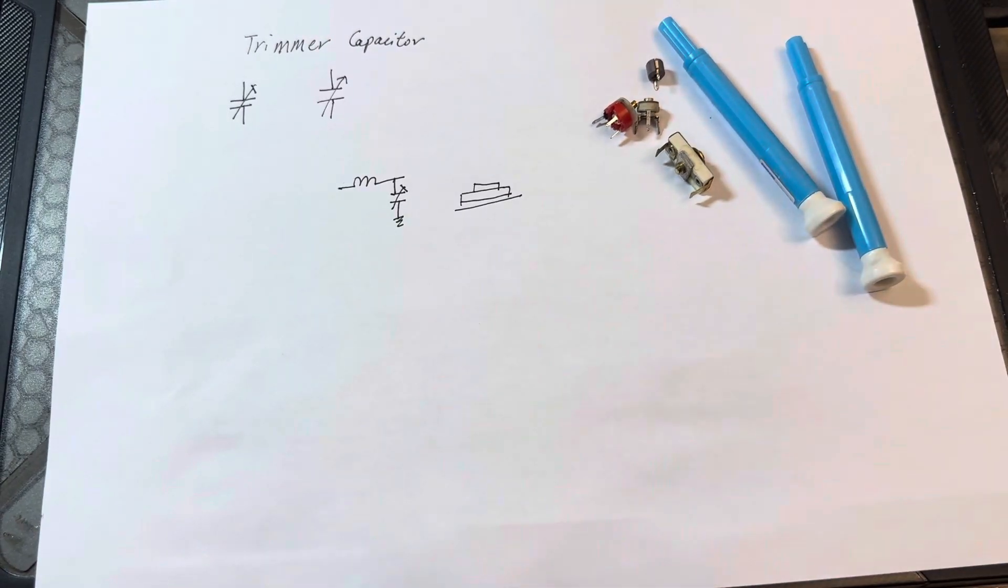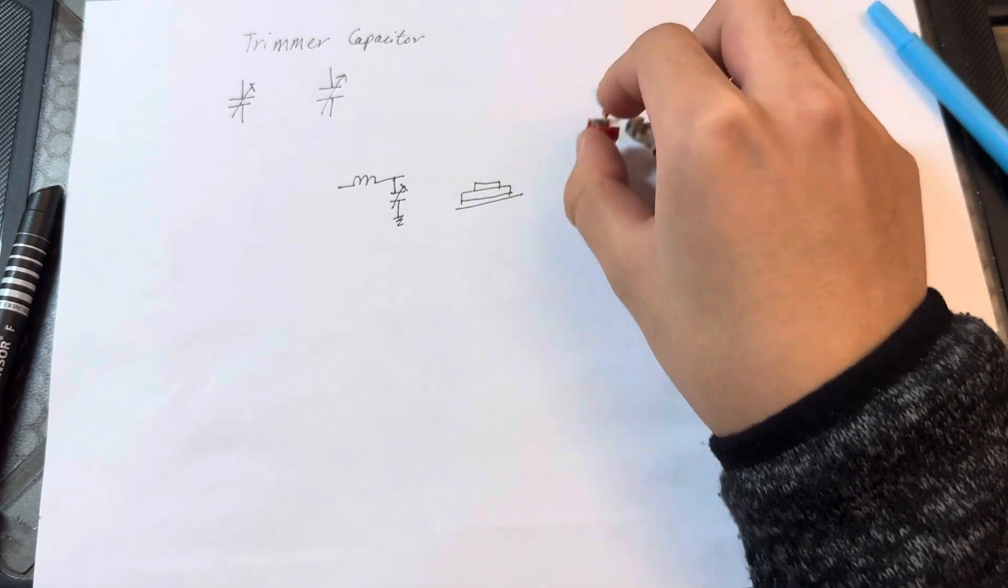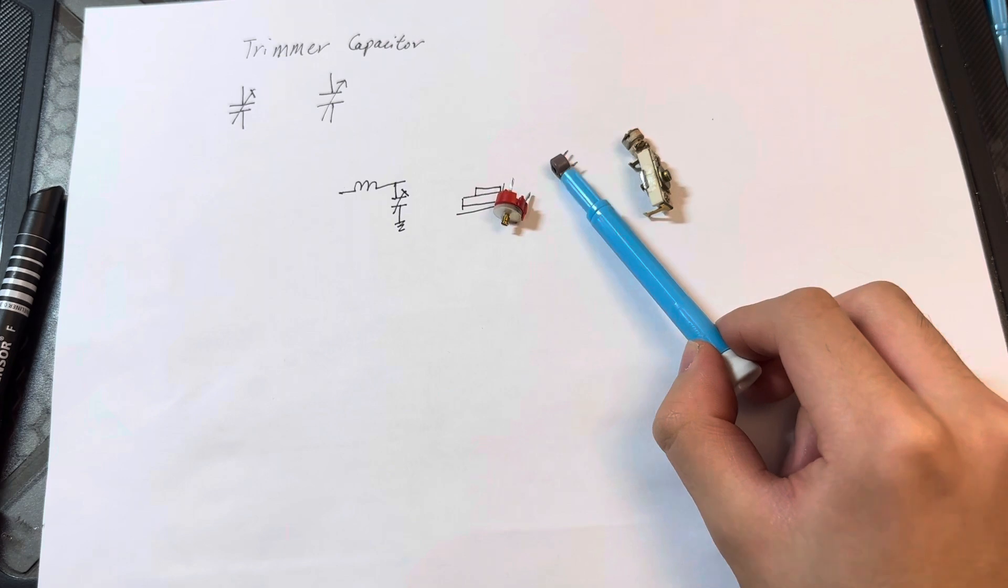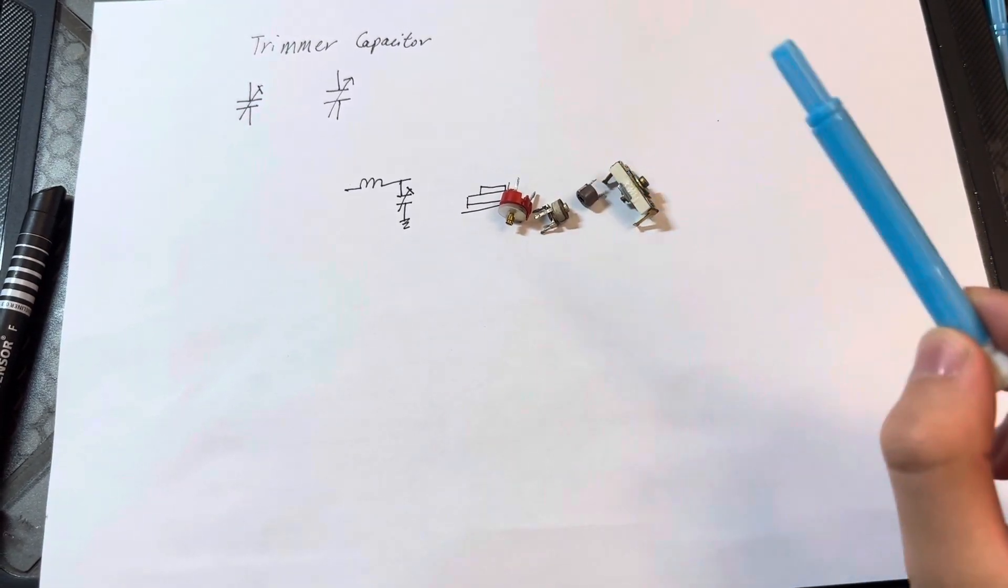Here we've got three different types of variable capacitors: a polymer style, a plastic-encased ceramic style, a normal ceramic variable, and a micro trimmer.